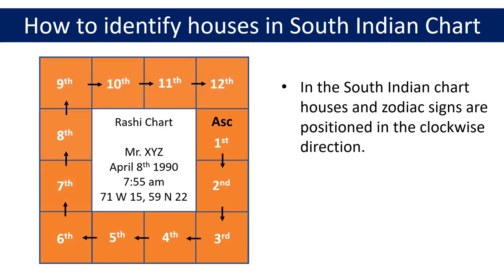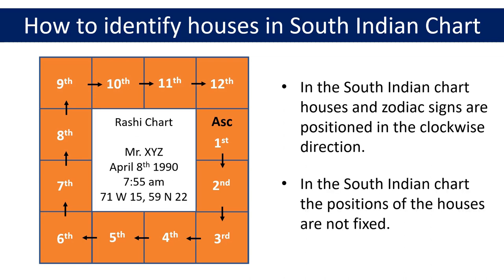These are the positions of the 12 houses in a particular South Indian chart. If the ascendant or lagna were in some other square, that would become the first house and the positions of the remaining houses would be decided by taking the clockwise route from that first house. The positions of the houses in the South Indian chart depend on the position of the ascendant or lagna, with subsequent houses identified by moving clockwise from the first house.